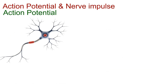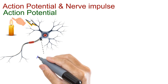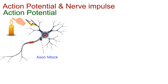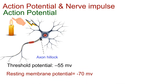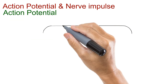Now that the neuron is at rest, let's see what happens when a stimulus arrives. When a receptor detects a strong enough signal, it triggers a small electrical disturbance that reaches the axon hillock, the control point of the neuron. If this disturbance is strong enough to cross a certain limit, known as the threshold potential around minus 55 millivolts, the neuron becomes active. And this is where the real action begins — the action potential.